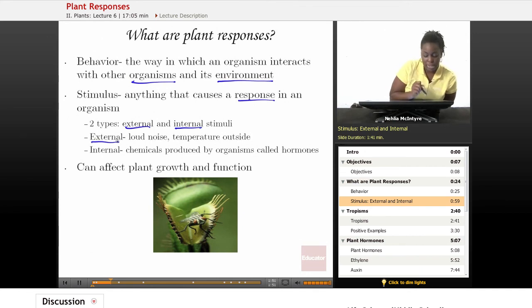An external stimulus, an example would be like a loud noise coming from a car or a truck, or the temperature outside, whether it's getting really cold or really hot. Those would be external stimuli because they affect the organism but come from an outside source.